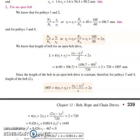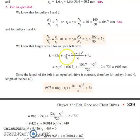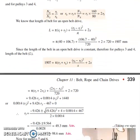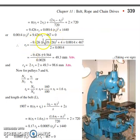The distance between the two shafts x = 720 mm is substituted into the open belt length formula. We calculate the total effective length L, then apply the same length formula for pulleys 3 and 4, and again for pulleys 5 and 6. This leads to quadratic equations that must be solved.